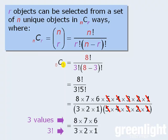Well, it comes from up here. It is the value of R. We are selecting a set of 3 objects from 8 objects.